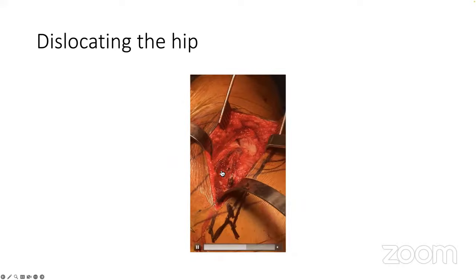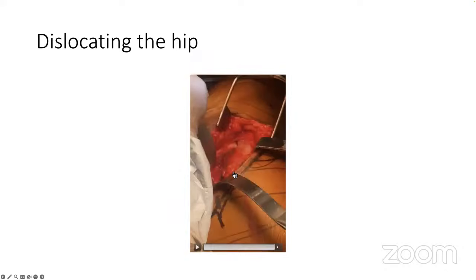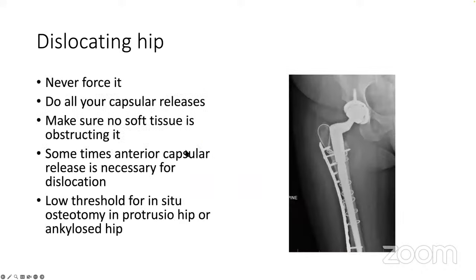When I do the release I put my finger underneath the femoral neck to make sure there's no capsular attachment left, as that's one reason it doesn't dislocate. Intercapsular soft tissue can also be obstructing, and you can release the intercapsule if necessary. I keep a very low threshold to do an in-situ osteotomy, specifically in a protrusio or stiff hip that is not coming out. I would do a double osteotomy, take away the bone, and use a corkscrew or other device to remove the femoral head, sometimes piecemeal if necessary.